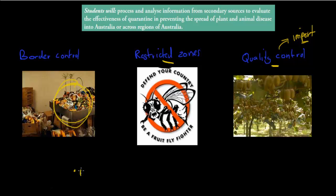Whilst we can minimize the risk, we can't eliminate it entirely. Minimize is possible, but there's still going to be some chance that disease will enter Australia, because it's impossible to completely seal off the borders. So whilst quarantine is effective, it's not completely 100% foolproof - there's always going to be some spread because it's hard to control everything unless we completely close our borders to airplanes and cargo ships and everything else.